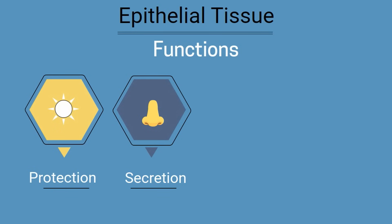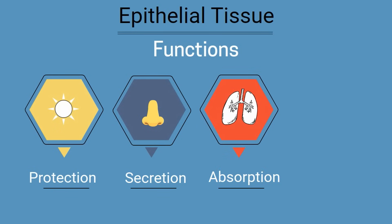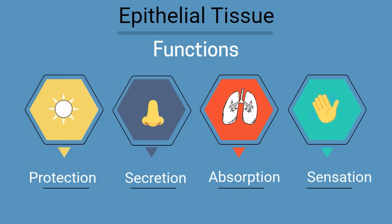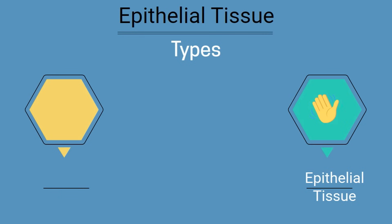Epithelial tissues are also involved in absorption and exchange — for example, oxygen and CO2 are exchanged through epithelial tissues. They are also important in sensation and how we touch and feel our world. Epithelial tissues are divided into several types classified by both their shape and number of layers.